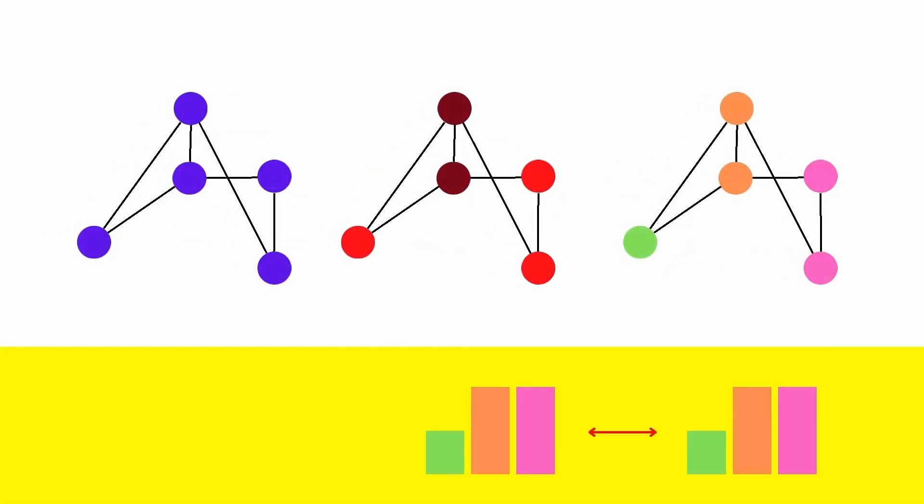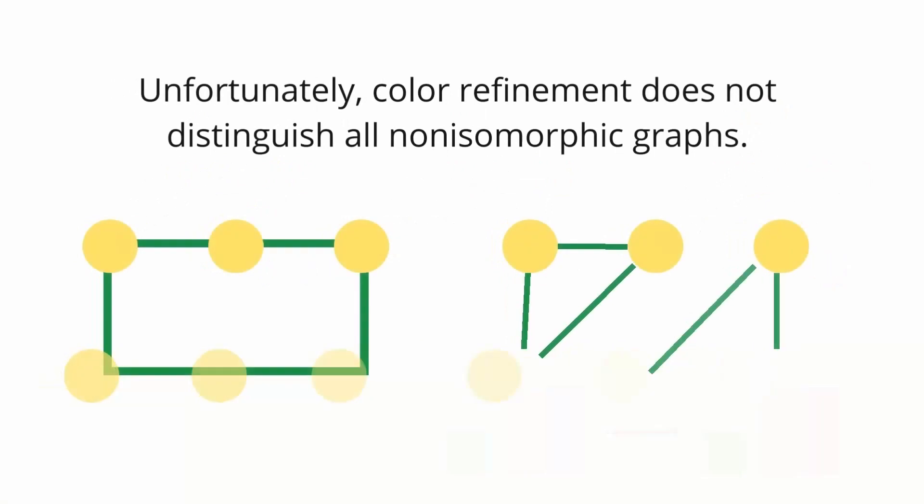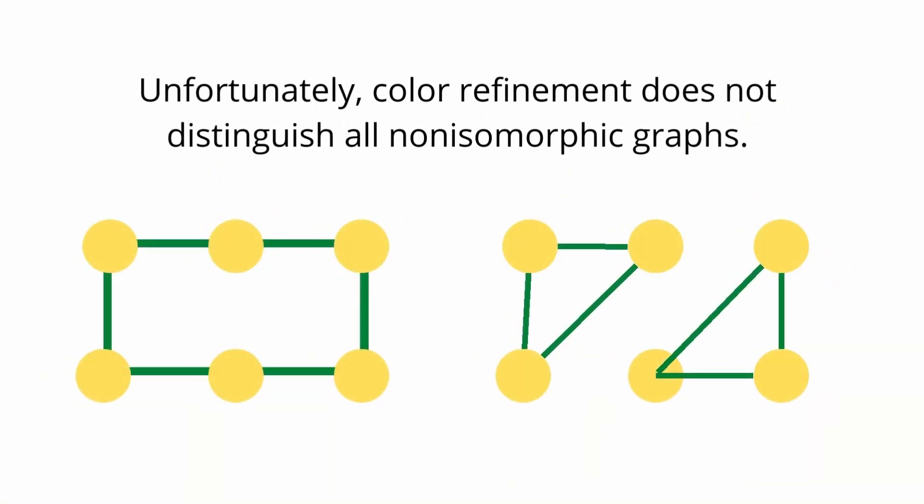Here we have another graph. Is it an isomorphic graph? We proceed with the same WL test, and as you can see, the bar chart from graph number one to this graph is identical. So are they isomorphic? Well, unfortunately, color refinement does not distinguish all non-isomorphic graphs.